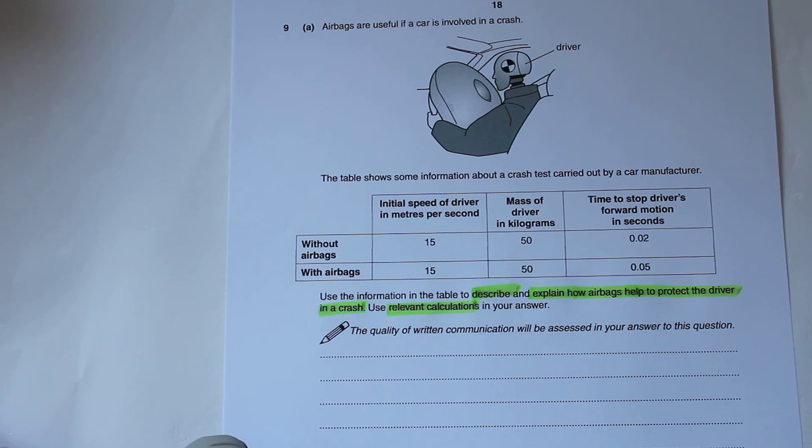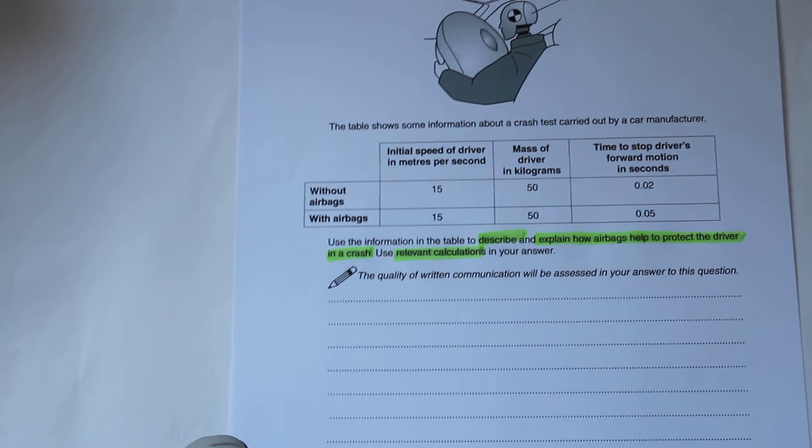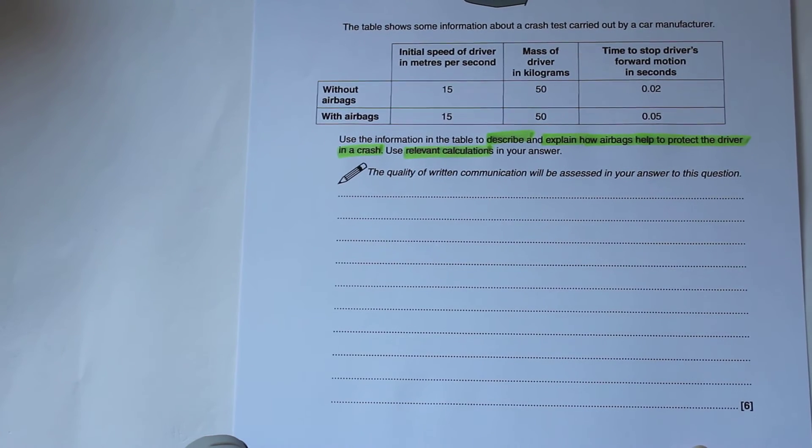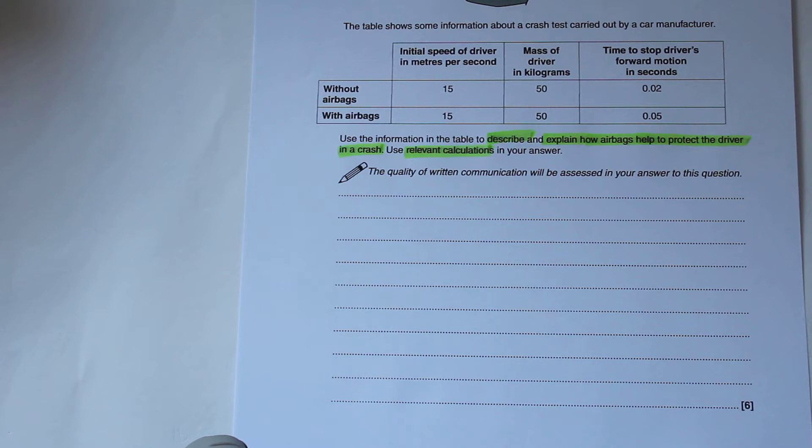You might still get the level twos or the level ones, but you certainly will never access the level threes. So the first thing to do is to actually carry out your calculations. On here we've got the initial speed of the driver, the mass of the driver, and the time taken to stop. Because we're talking about airbags, hopefully we remember that anything to do with collisions should involve momentum. If you turn back to page two on your exam paper, you're going to find the calculations you need.